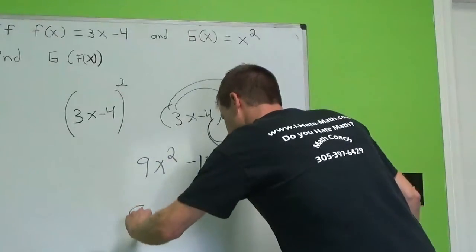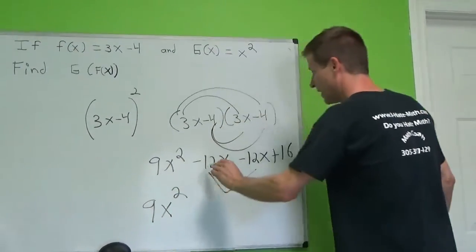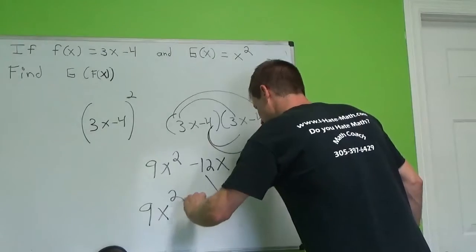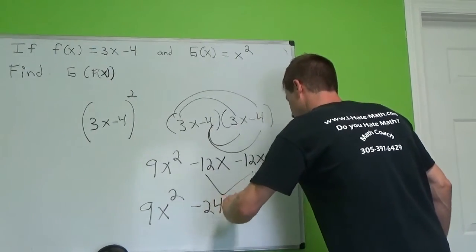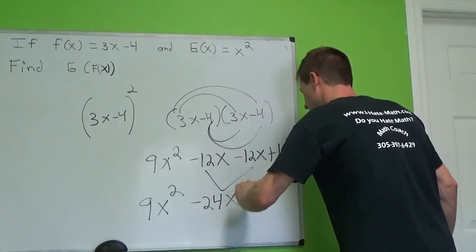This. So then we write, we drop this down. Negative 12x, negative 12x, when it's combined, it's negative 24x. Drop down to 16, positive 16.